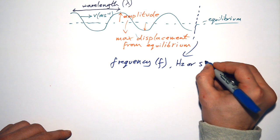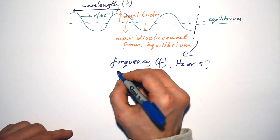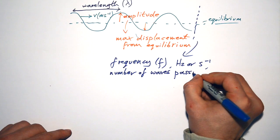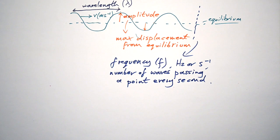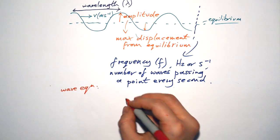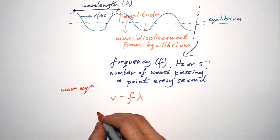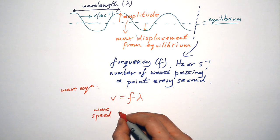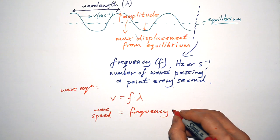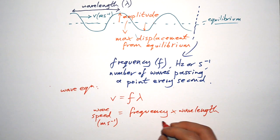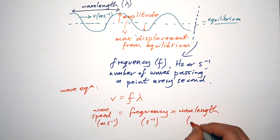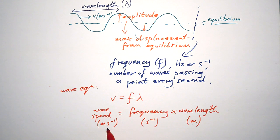With waves, we talk about frequency. We give it the symbol f, measuring in hertz, which is the same as seconds to the minus one per second. All that means is the number of waves passing a point or being produced every second. Now there is an equation that links together three of these things, but not amplitude, because amplitude doesn't really affect what's going on with the speed of the wave. But here is the wave equation: v equals f times lambda. Wave speed equals frequency times wavelength.